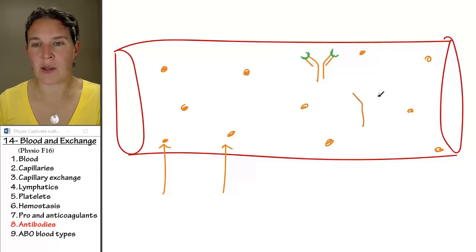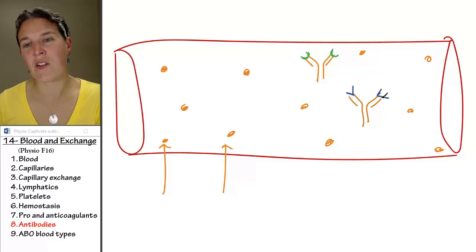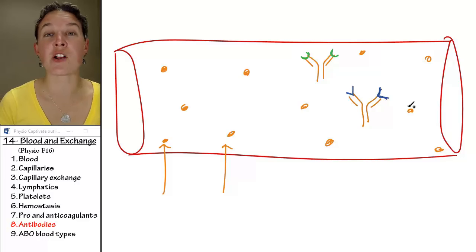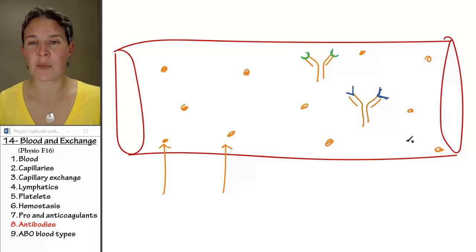I'm going to make another one over here, and this one I'm going to make the little part look a little different in blue. These are the variable regions of an antibody, and the variable regions match up to an antigen.